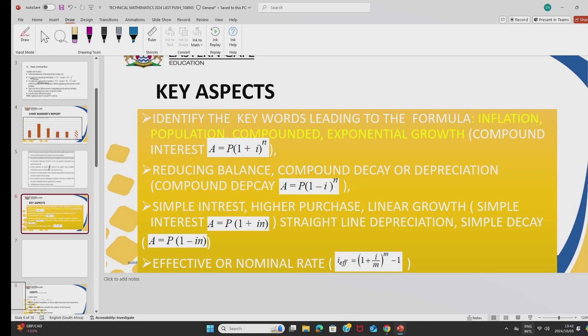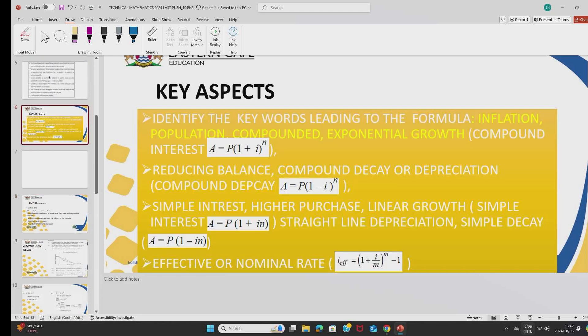If the statement has the word reducing balance, compound decay, or compound depreciation, it tells you that you need to use a compound decay formula. It differs from the compound interest formula because it has the minus. As you can see, the compound interest formula, it has a plus, yet the compound decay formula, it has a minus. So as well as the simple interest, you get a plus. And then for the linear depreciation or a simple decay, it has got a minus. So you need to master the formula to get the marks.